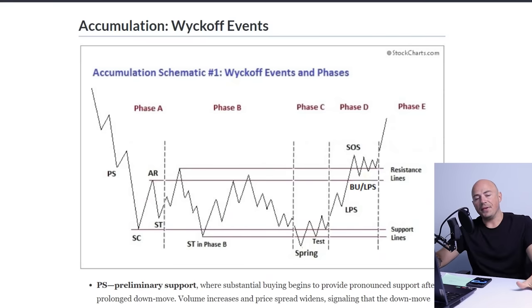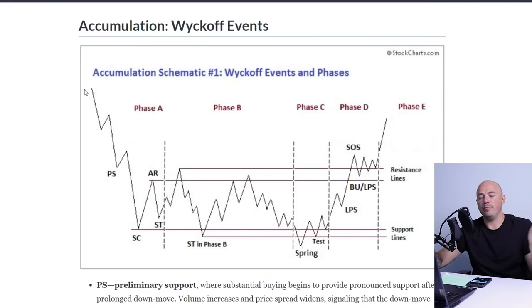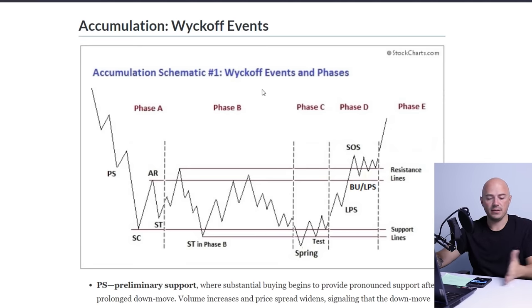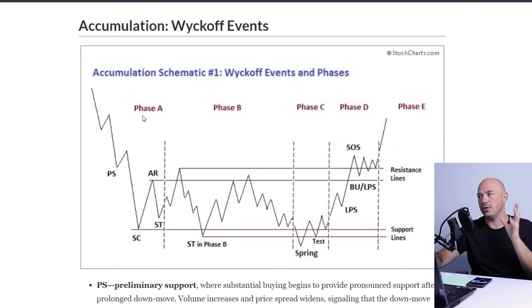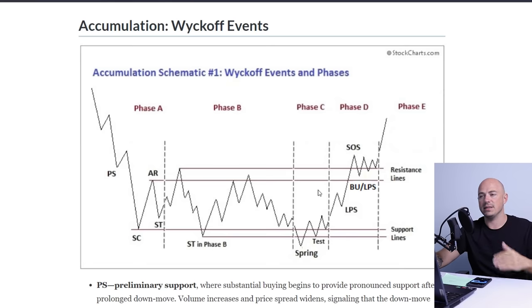If you guys want another in-depth video explaining the entire breakdown of the accumulation phase and the entire series of events that happen in each one of these phases to get the laser entries, let me know in the comment section down below. It goes phase A, phase B, all the way to phase E, breaking the support and resistance lines — it's really, really in-depth, advanced stuff. I just wanted to give you a breakdown of the Wyckoff theory and method and how supply and demand work.